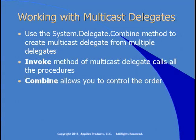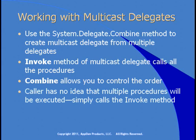Use the system.delegate.combine method if you want to create a multicast delegate from multiple delegates. The invoke method of a multicast delegate calls all the procedures in turn, in the order you add them to the list. Combine allows you to control the order, and the caller has no idea that multiple procedures will be executed — it simply calls the invoke method. If you've done much work with Visual Studio and events already, this is starting to feel like the concept of events in .NET, and really it is the exact same thing.